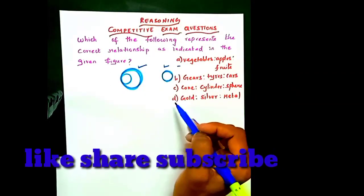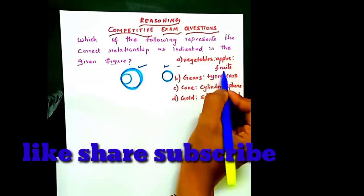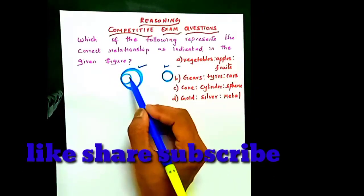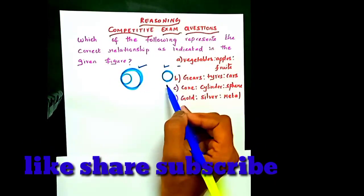We have three options. First, vegetable, apple, and fruits. Apple is within fruits, so the vegetable is separated.